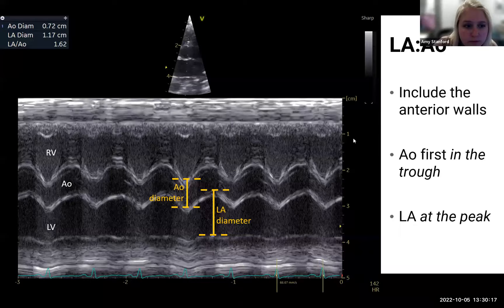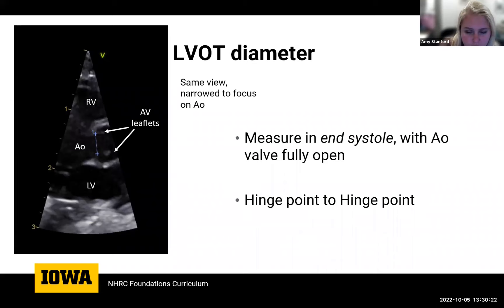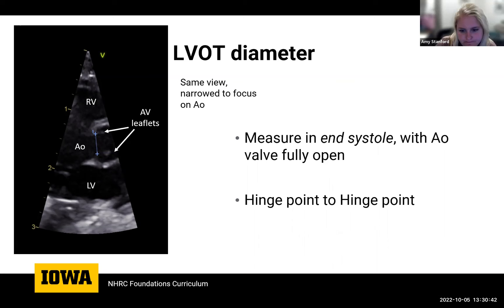Measuring the annulus with hinge point to hinge point on both the aorta and the PA is probably the hardest thing to learn how to do. Practice and repetition make it easier. Do not worry if this is something you struggle with — it just takes time.